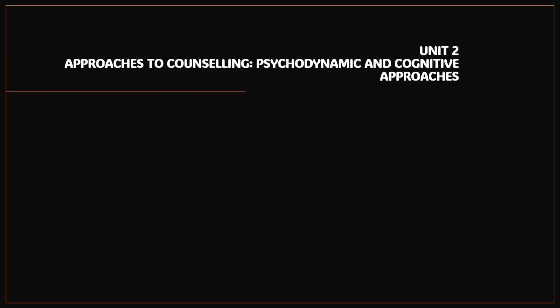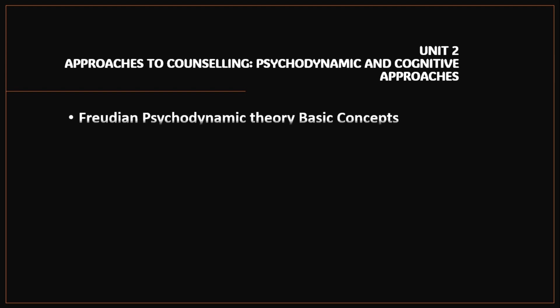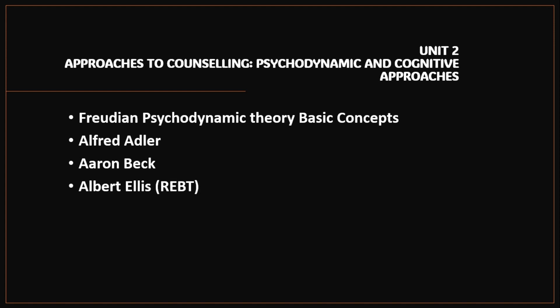Unit 2 of Block 2 is an important unit — multiple questions are being asked from this unit for the December term-end exam, but you need to focus on it for the June exam as well. The topics here are: Freudian psychodynamic theory basic concepts, Alfred Adler's theory, Aaron Beck and Albert Ellis's REBT model. You can omit Unit 3 from this block.